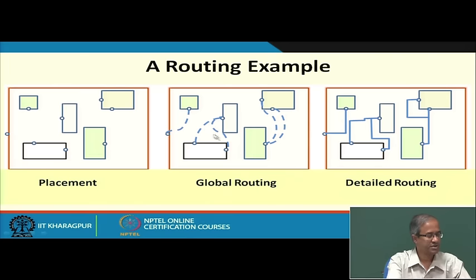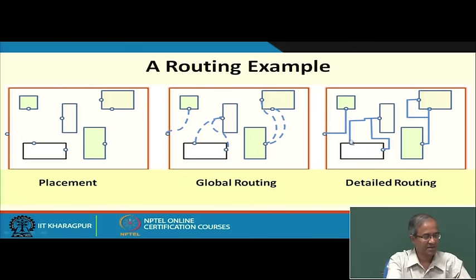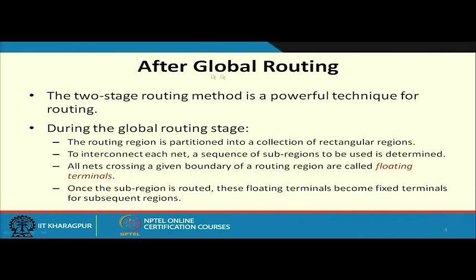Here is a pictorial illustration. After a set of blocks are placed, the rectangular boxes are the blocks and the small circles are the pins which need to be connected. Global routing gives an approximate route — this pin has to be connected to that pin — giving you the sequence of routing regions to follow. In the detailed routing step, for each net, the exact geometrical layout of the horizontal and vertical wire segments has to be finalized. Once detailed routing is done, the layout in terms of routing is complete.